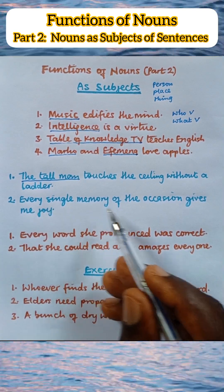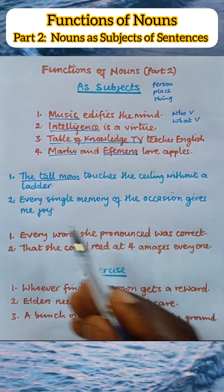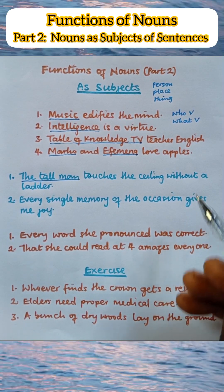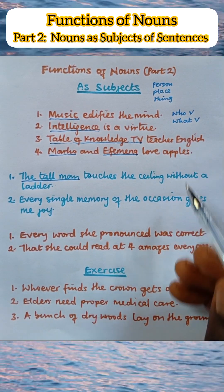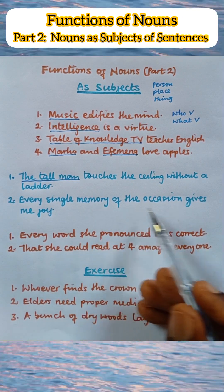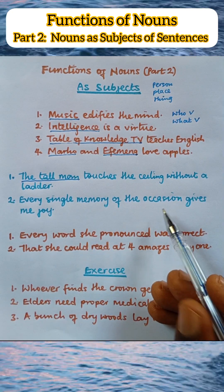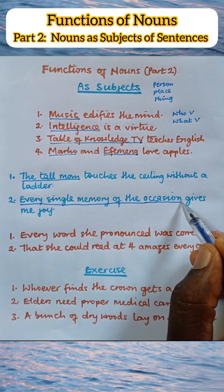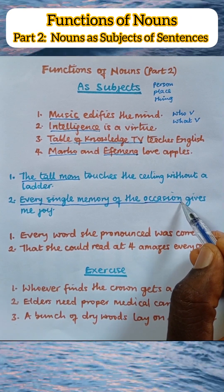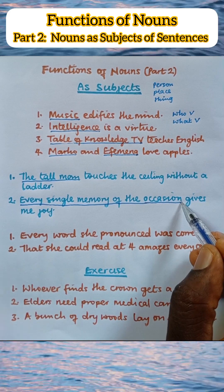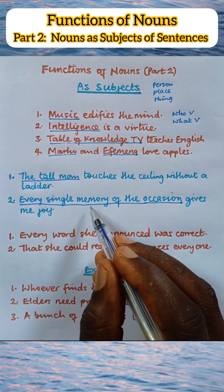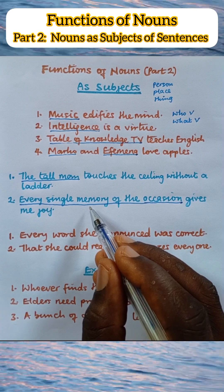Example 2: 'Every single memory of the occasion gives me joy.' The verb here is 'gives,' and we ask, 'What gives me joy?' The answer is 'every single memory of the occasion.' So every single memory of the occasion is the subject of this sentence. It is a phrase, and since it occupies the position of a subject it is a noun. So this expression is a noun phrase.